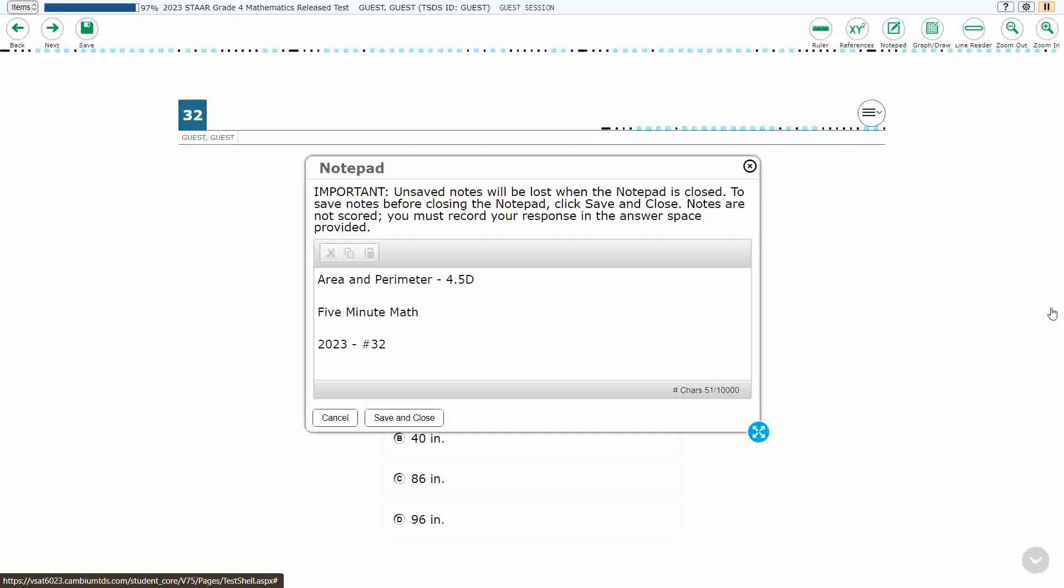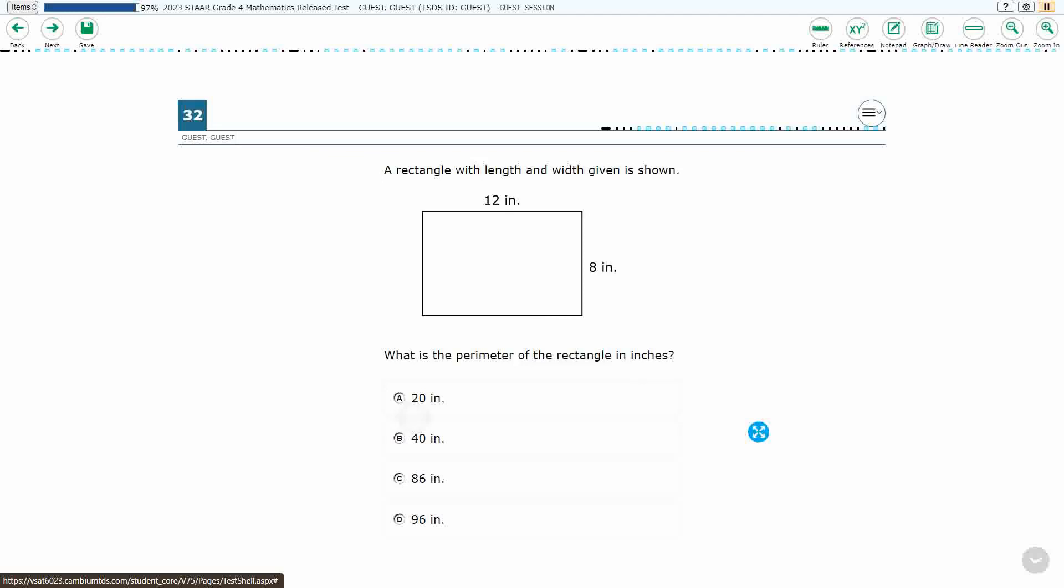Hello and welcome to 5-Minute Math. Today we are looking at the 4th grade concept of Area and Perimeter. This is standard 4.5D in the great state of Texas, and we are using item number 32 of the 2023 released STAAR test.